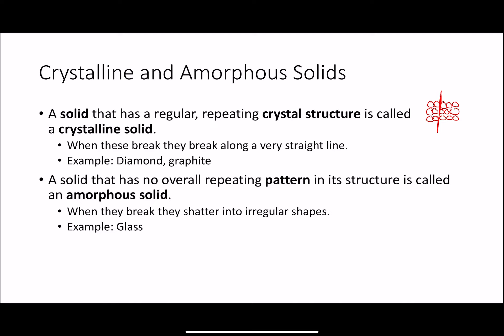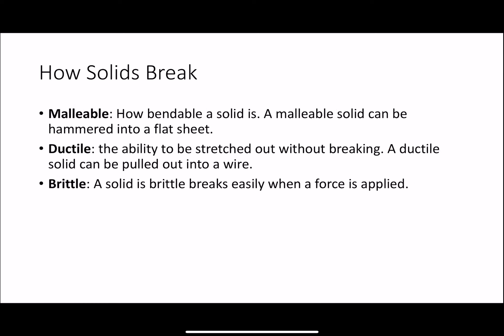You could also have a solid that does not have a repeating pattern like this. It could just be irregular. Something that's random, does not have a regular repeating pattern, that would be an amorphous solid. When an amorphous solid breaks, it would shatter into these weird irregular shapes. An example of this would be glass. When you break a piece of glass, you can't predict what the shards are going to look like. They have these random patterns. That's an example of an amorphous solid.